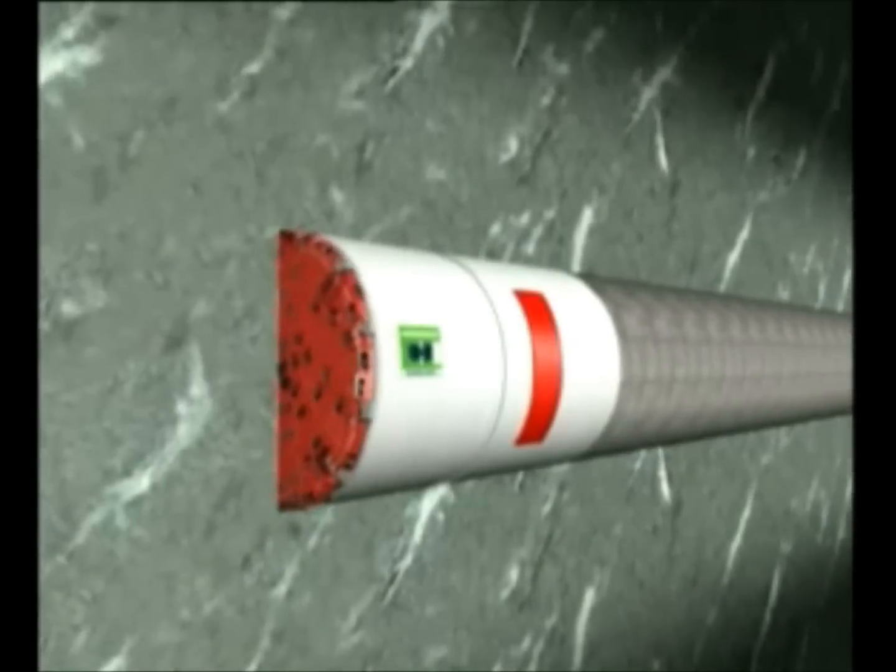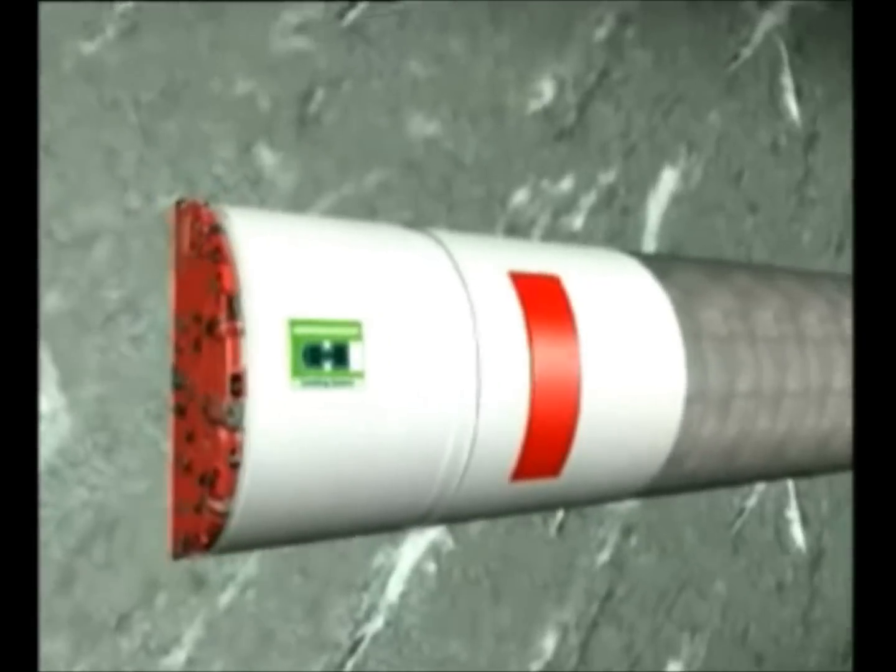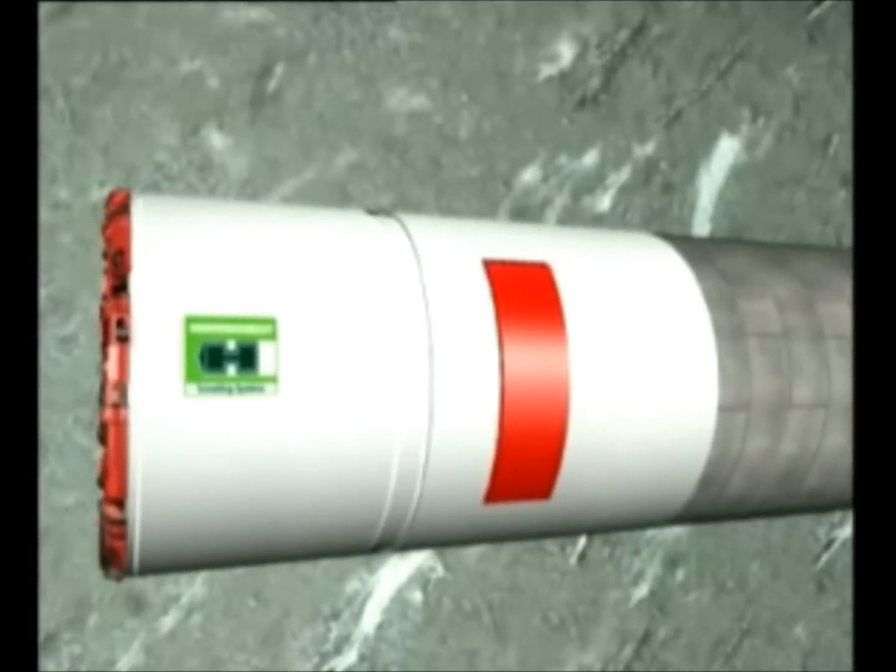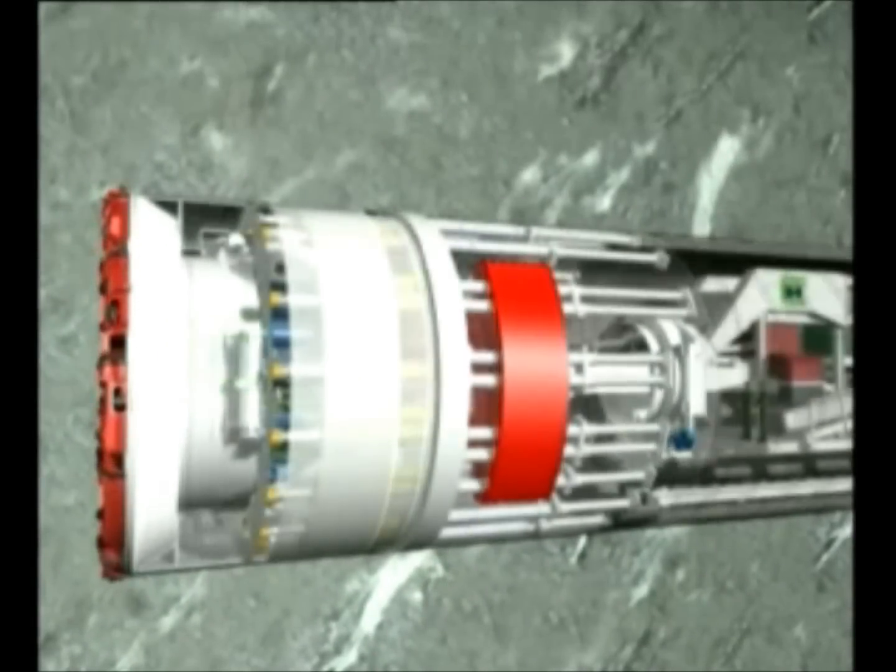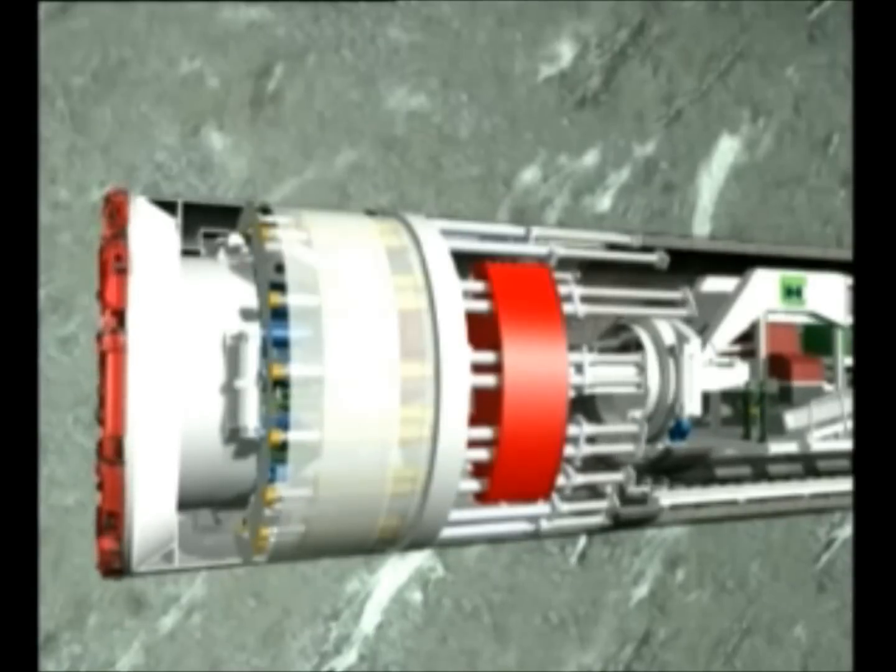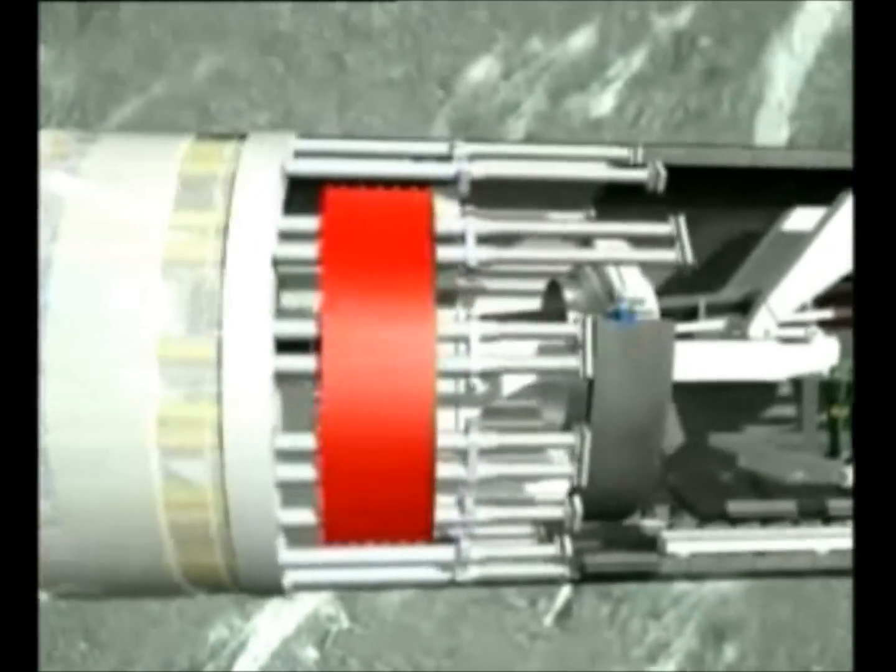The tunneling takes place in protection of a thrust shield, which serves as a rock support until the tunnel lining is installed. In the rear part of the tunnel boring machine, the so-called tail skin, reinforced concrete elements are installed.